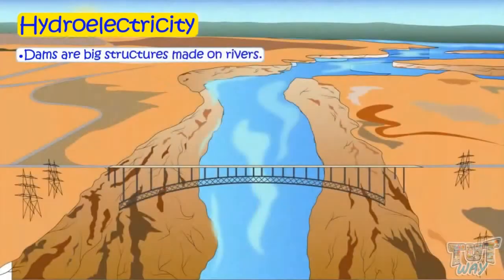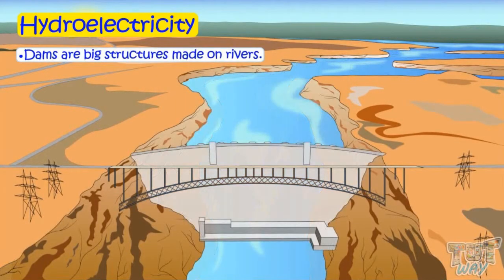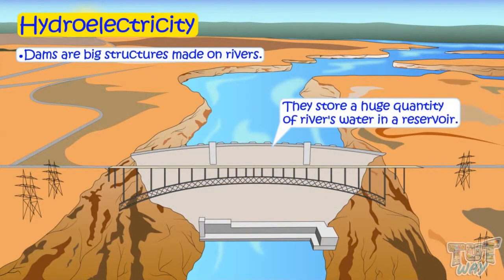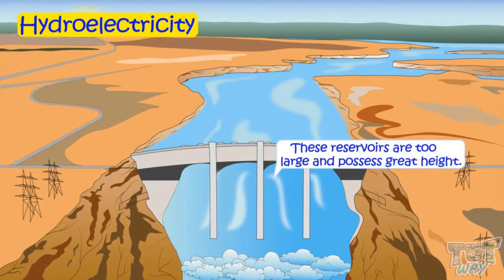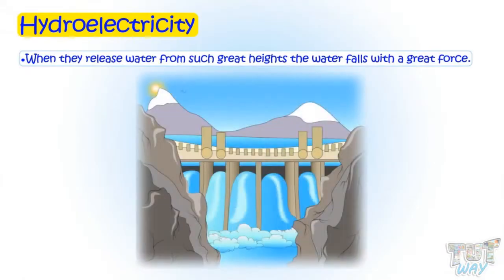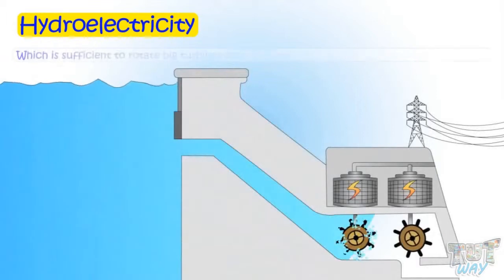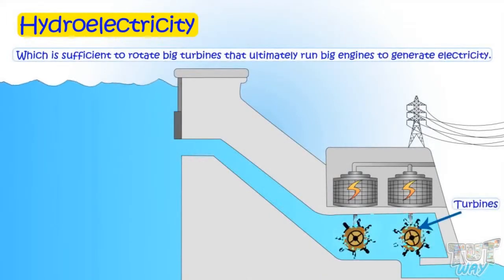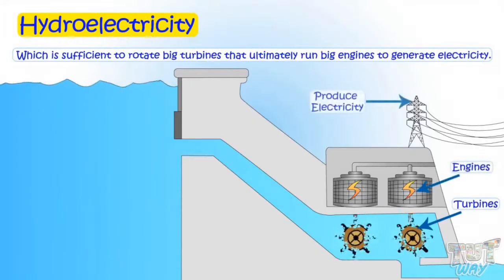Dams are big structures made on rivers that store a huge quantity of the river's water in a reservoir. These reservoirs are very large and possess great height. When they release water from such great heights, the water falls with a great force, which is sufficient to rotate big turbines that ultimately run big engines to generate electricity.